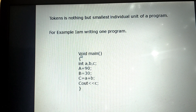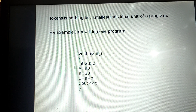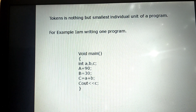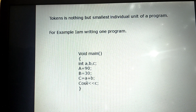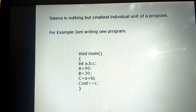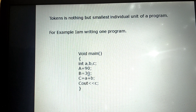Void — it is a keyword, and this keyword is also a token. Then int is a data type, which is also a keyword and a token. Next, the variables a, b, and c — these are tokens. Then the equals sign and plus — these are operators: arithmetic operator and assignment operator — and these are also tokens. Then 90 and 30 — these are constants, and constants are also tokens.